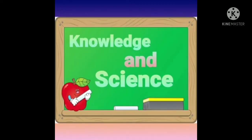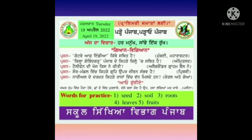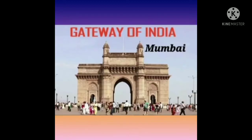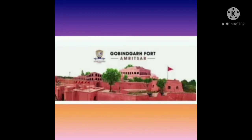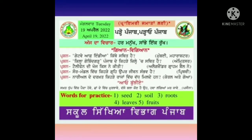Knowledge and Science. First question: Where is the Gateway of India situated? Gateway of India ਕਿੱਥੇ ਸਥਿਤ ਹੈ? Its answer is Mumbai, in Maharashtra. Question number 2: In which district of Punjab is Fort Gobindgarh situated? ਕਿਲਾ ਗੋਬਿੰਦਗੜ੍ਹ Punjab ਦੇ ਕਿਹੜੇ ਜ਼ਿਲ੍ਹੇ ਵਿੱਚ ਸਥਿਤ ਹੈ? Its answer is Amritsar. Third question: Who invented the telephone? Telephone ਦੀ ਖੋਜ ਕਿਸਨੇ ਕੀਤੀ?